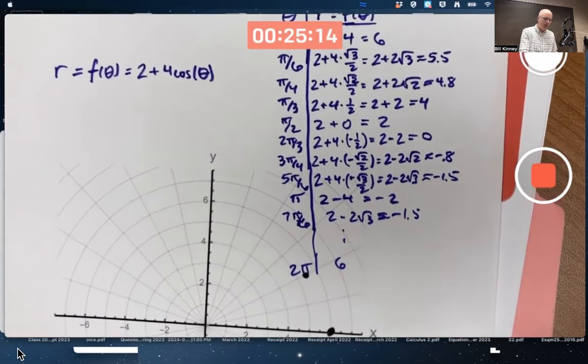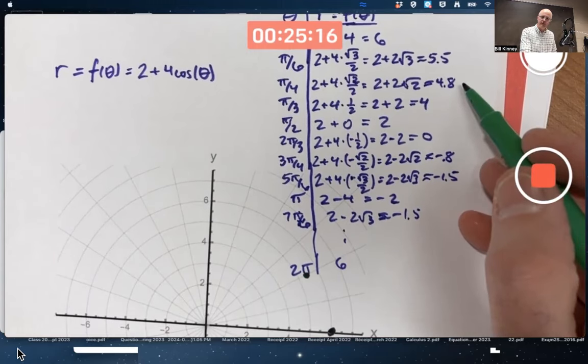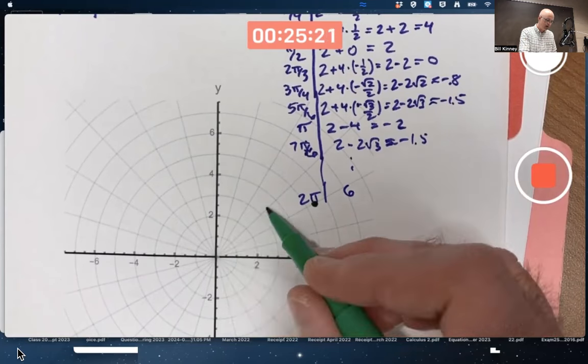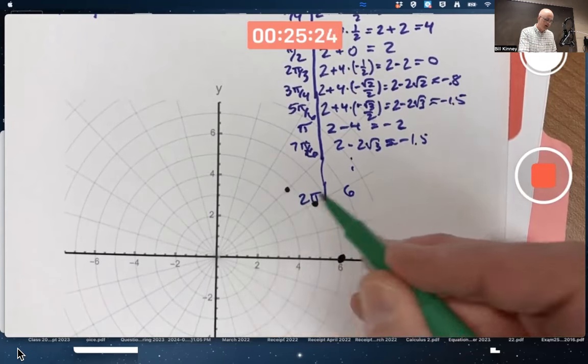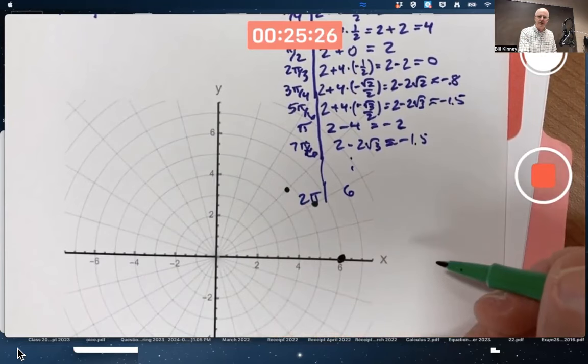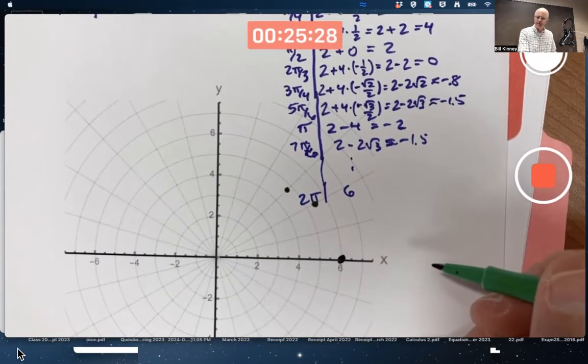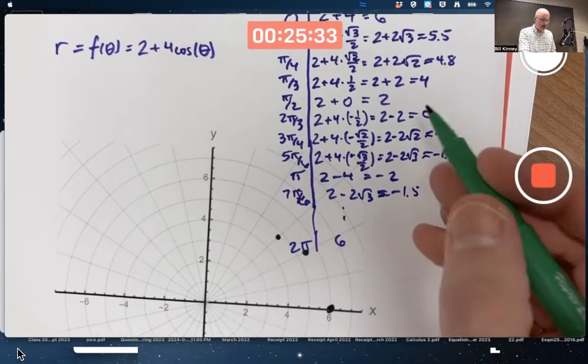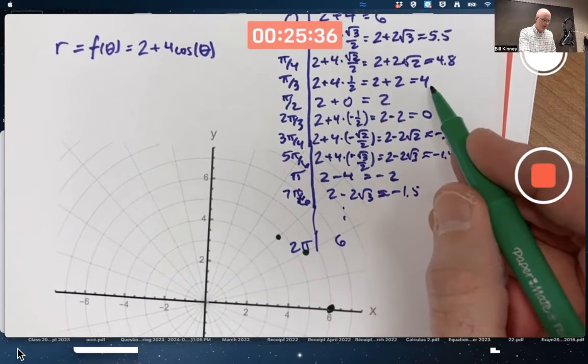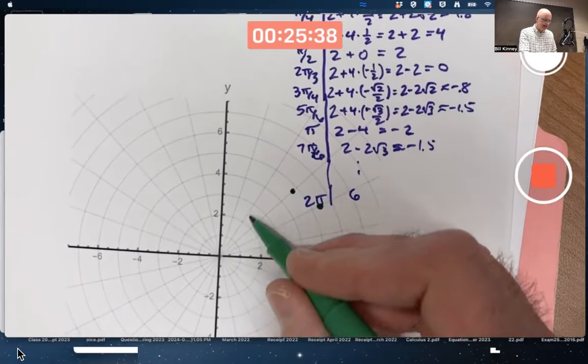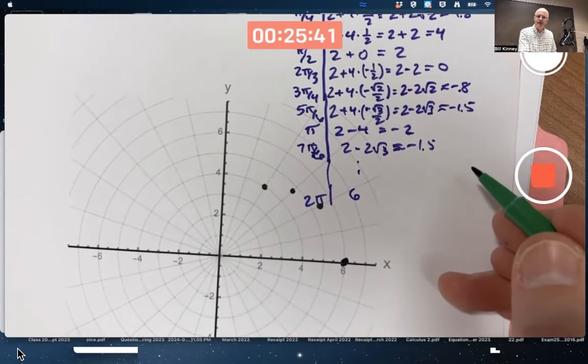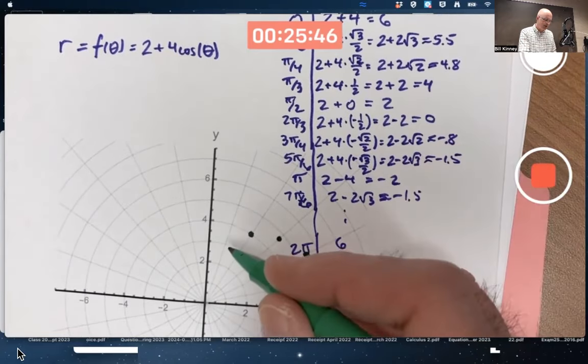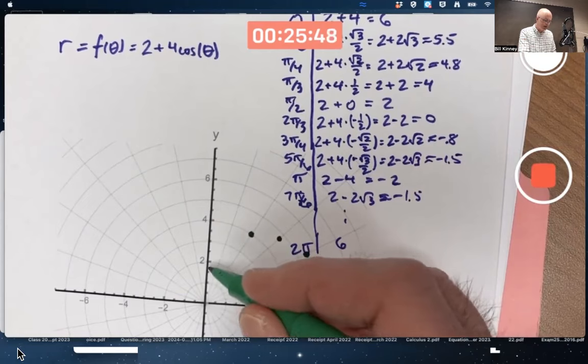When theta is pi over 4, 45 degrees, I'm about 4.8 units from the origin. The 45-degree line is this one. Go out 4.8 units brings me right about there. Maybe I should have used red. It's hard to tell that's green. When theta is pi over 3, 60 degrees, I'm 4 units from the origin. This is the 60-degree line. I'm right about there. When theta is pi over 2, I'm 2 units from the origin. Pi over 2 is 90 degrees. I'm right there.